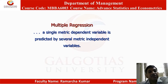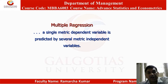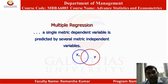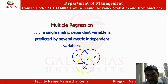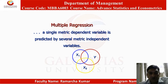Multiple regression is used when a single metric dependent variable is predicted by several metric independent variables. For example, if we have independent variables X1 and X2 and a single dependent variable Y, and we are interested in how both X1 and X2 affect Y, we use multiple regression.